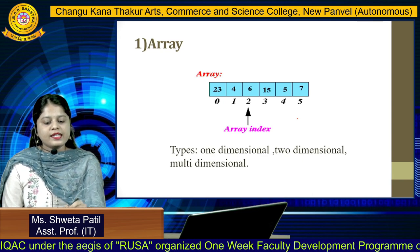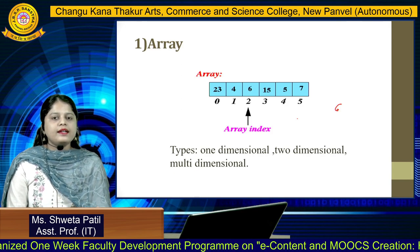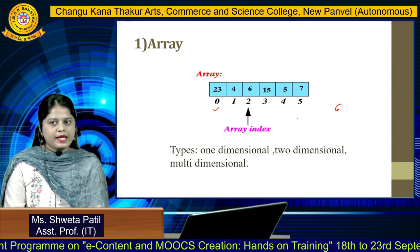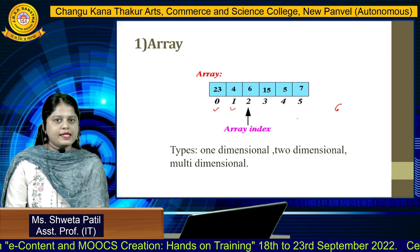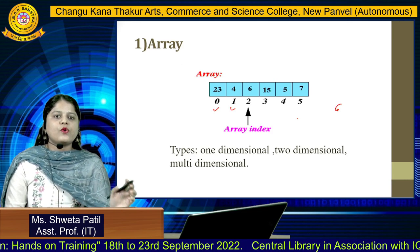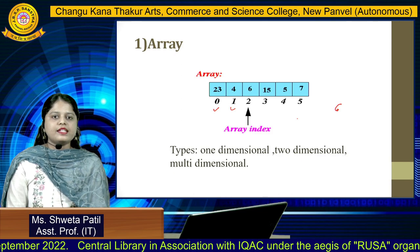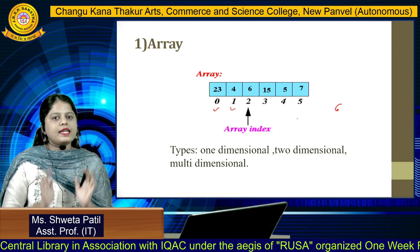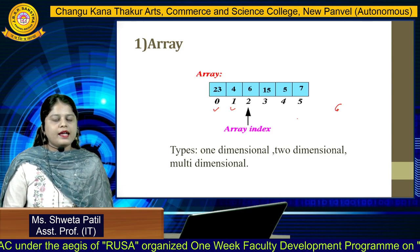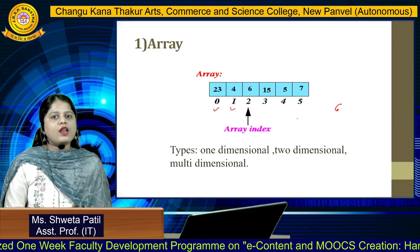As you can see in the given diagram, the array contains six elements. Array indexing always starts with zero. At index zero, element 23 is present; at index one, element 1; at index two, element 6; at index three, element 15, and so on. The basic rule of array is that it contains only similar kind of data and indexing always starts with zero. If you have seven elements, indexing goes from zero to six. Under the types of array, there are four types: one-dimensional, two-dimensional, three-dimensional, and multi-dimensional.